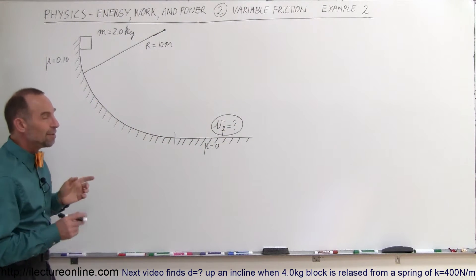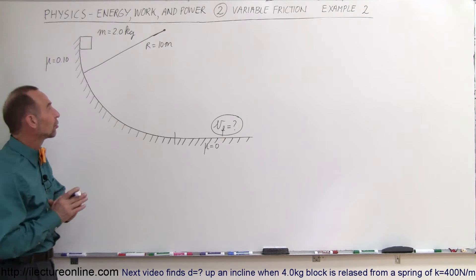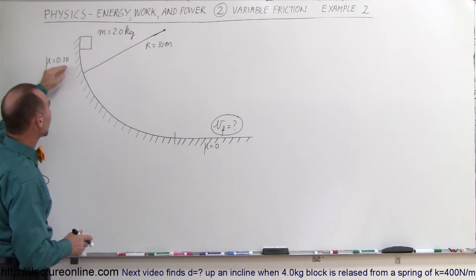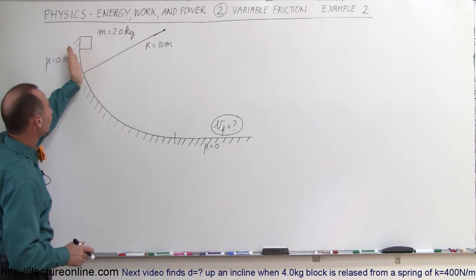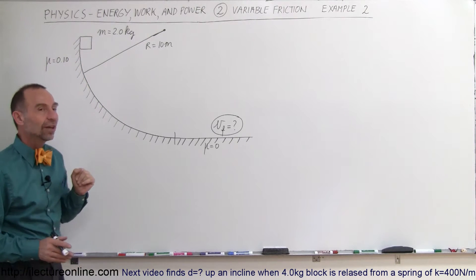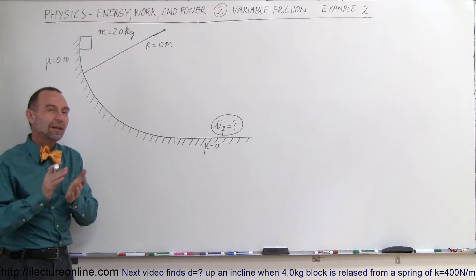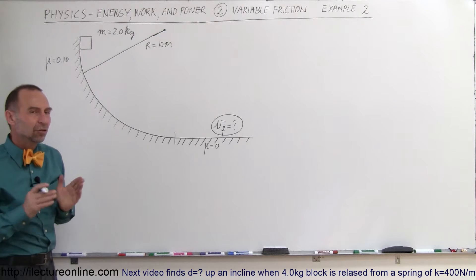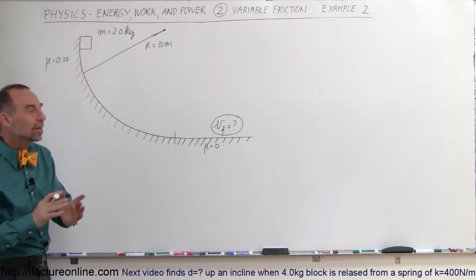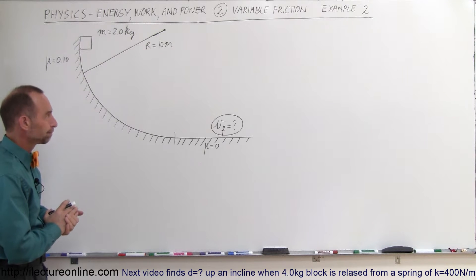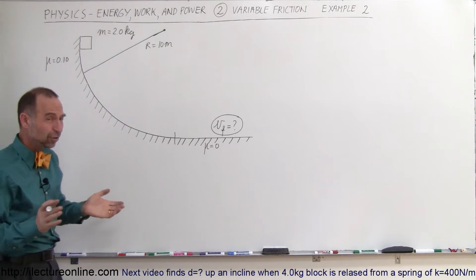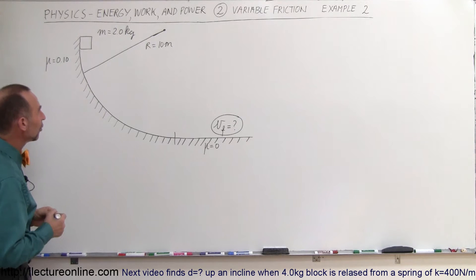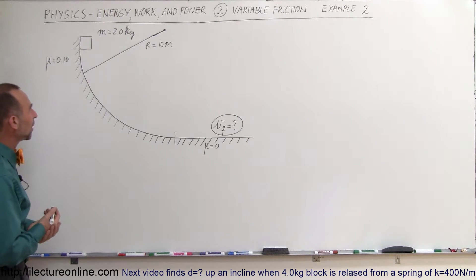There's going to be variable friction. The reason why there's variable friction — even though the friction coefficient is constant — is because the angle of the slope continuously changes, and the amount of friction force depends on that angle. So we're going to have to use an integration technique to solve this problem. This fits in the category of variable friction.